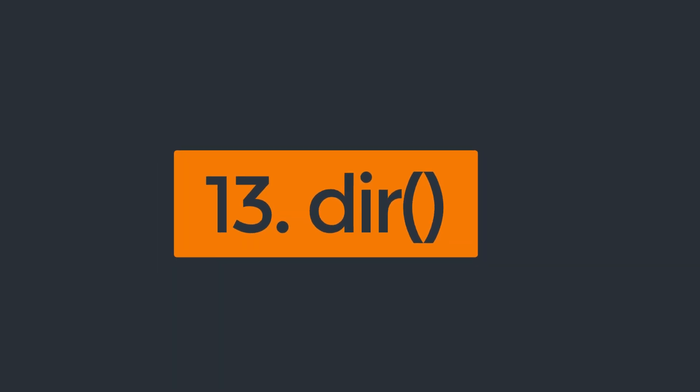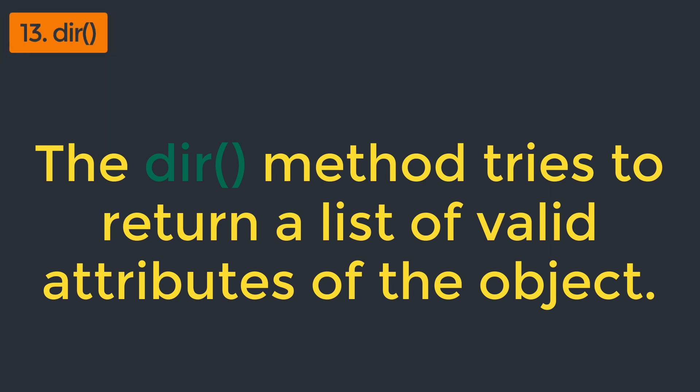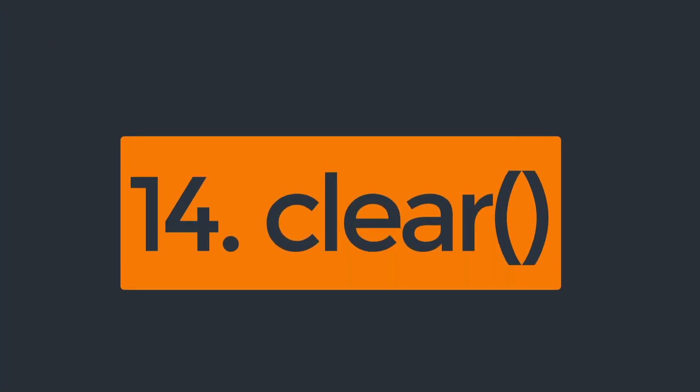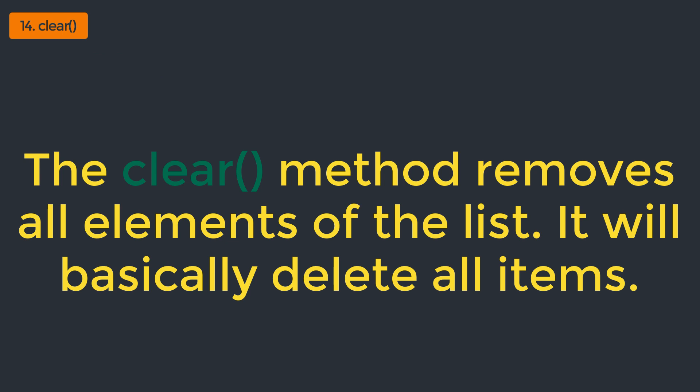The next method is dir. The dir method tries to return a list of valid attributes of the object. It takes only one optional parameter. If we call this method for a list, it will print all of the possible methods available for the list. We can also override this method for user-defined objects by defining the __dir__ method. Our next and last method for this video is clear. It removes all elements of the list, basically deleting all elements. If we call clear for a list or a dictionary, it will remove all elements from them.